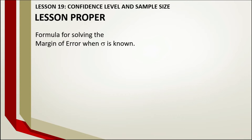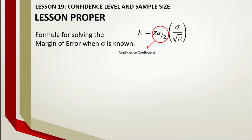Now, how about when we have a margin of error with a known standard deviation? The margin of error formula is: E equals the confidence coefficient multiplied by the standard deviation over the square root of n. In this case, what we need is the sample size n. How do we determine the sample size when we already know the margin of error and the standard deviation?